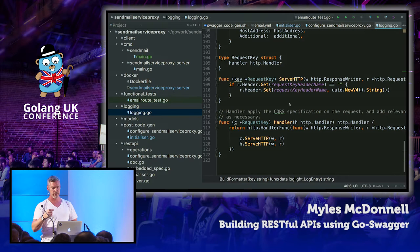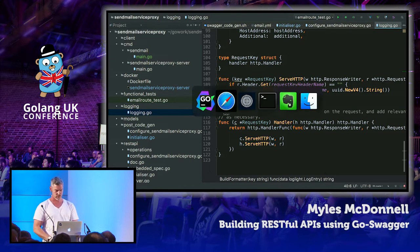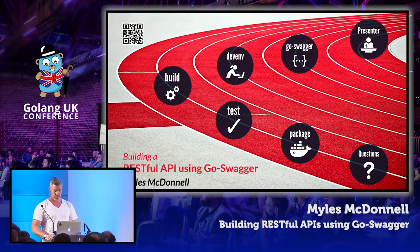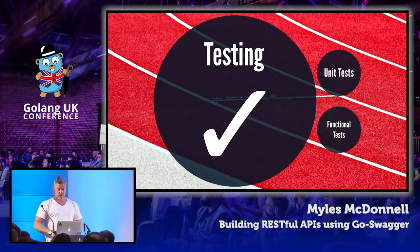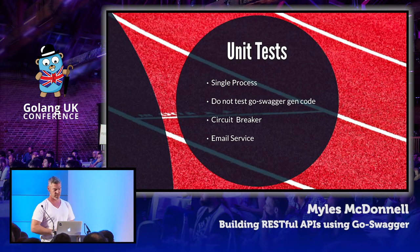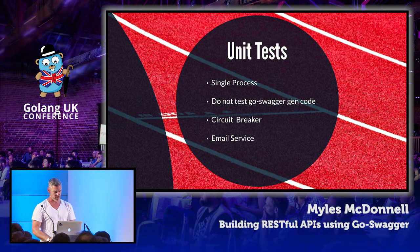You can understand that when you look at all your logs from different services, you can stitch it all together. If you're outputting timestamps, you can obviously look at latency, performance, and so on. We've built something — obviously we want to test it. The first thing is to write unit tests, which run in a single process. We don't test any of the autogenerated code; we just test the code we've written to implement the application. We've got unit tests around the circuit breaker and the email service.